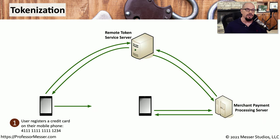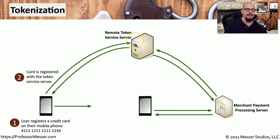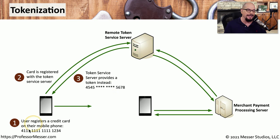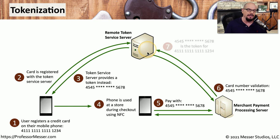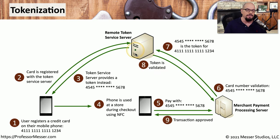Here's how tokenization works on your mobile phone. You first add your credit card number to your mobile phone, and once that's registered, your mobile phone communicates with a remote token service server. When that server receives the request, it sends back to your phone a token that will be used instead of your credit card number. That token is then used at a store when you check out using near field communication, at which point the merchant's payment processing server sends the validation to that token service server, which validates that the token is legitimate and the transaction is approved.